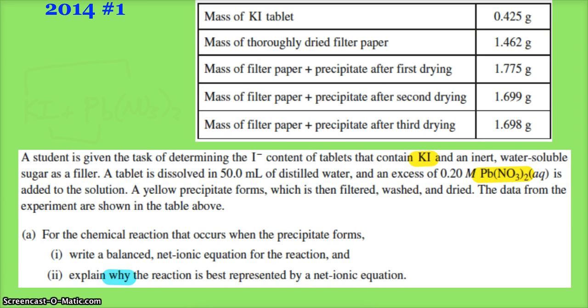This is our good friend gravimetric analysis. You can see the data there, and hopefully you notice that there was a first drying, a second drying, and a third drying—very typical of gravimetric analysis so we can make sure that the precipitate we have is completely dried with no more water.